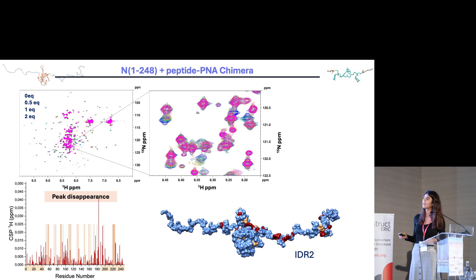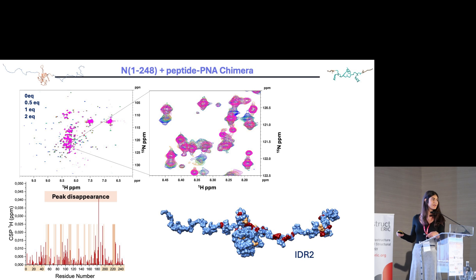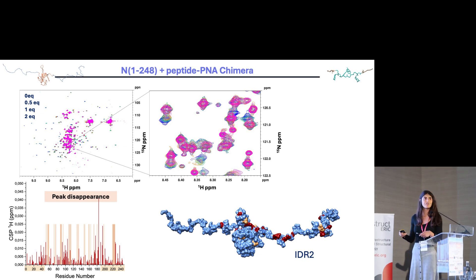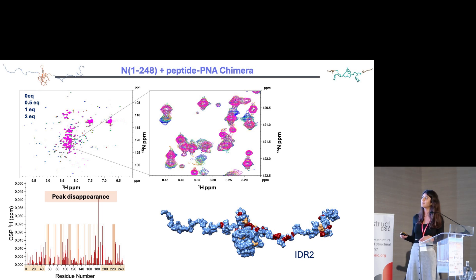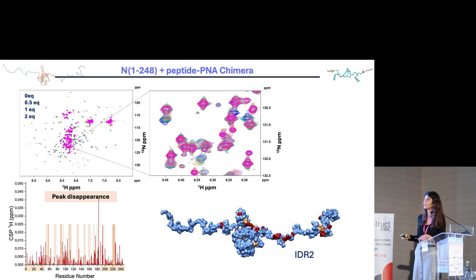Peak disappearance was observed in particular for residues belonging to the N-terminal domain that is now flanked by the intrinsically disordered regions. This suggests a different and probably higher affinity in the presence of the intrinsically disordered regions. The more affected flexible region is IDR2.